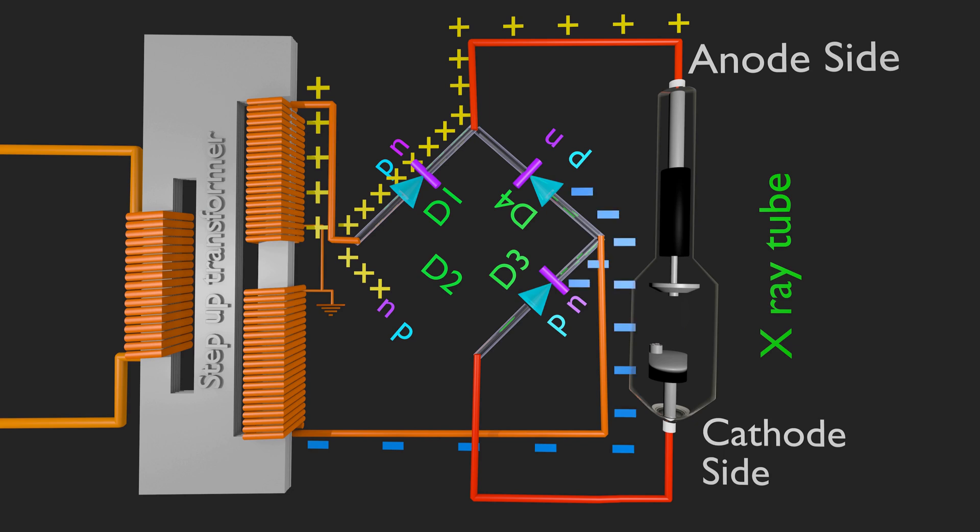Diode 3 is forward biased as N side of D3 is connected to negative polarity. D4 is reverse biased as p side of it is connected to negative polarity. As D4 is in reverse biased condition, it cannot conduct. Cathode side of X-ray tube will get negative polarity through D3.